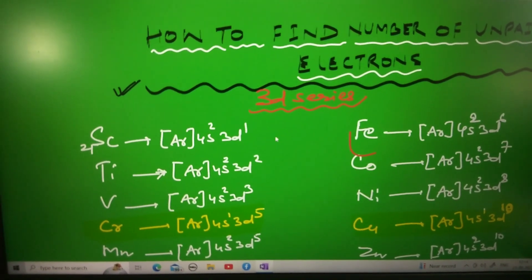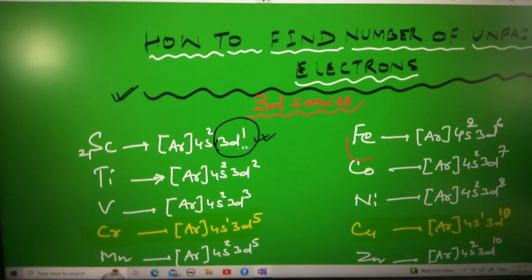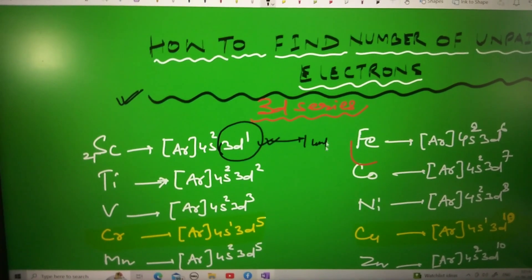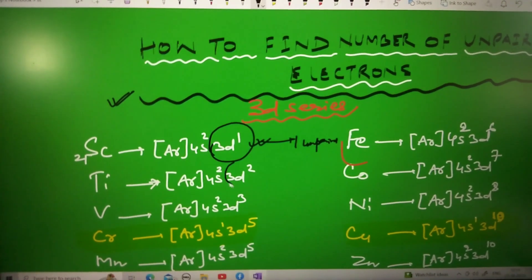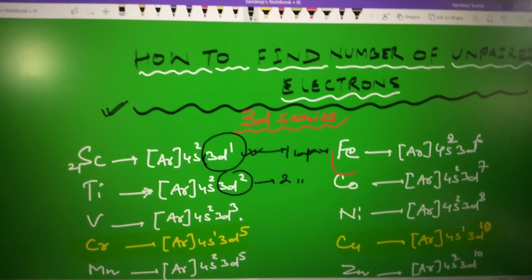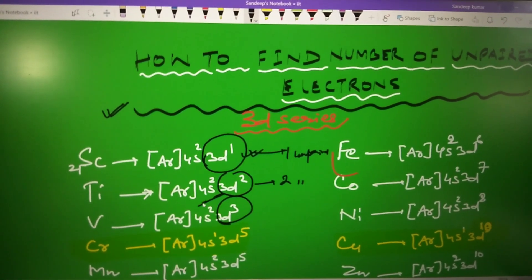In the first example, scandium has 1 electron in D, so it has 1 unpaired electron. In the second example, titanium has 2 unpaired electrons. In the third, vanadium has 3 because 4S2 is filled.